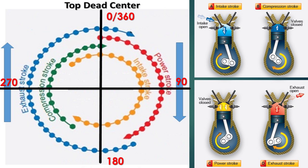As an example: the intake stroke, shown in yellow on the valve timing chart, begins before top dead center. The compression stroke, shown in green on the valve timing chart, begins after bottom dead center. The power stroke, shown in red, begins at top dead center. And the exhaust stroke, shown in blue, ends after top dead center.